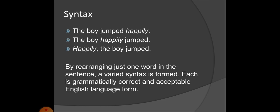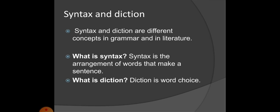In English language, 'The boy jumped happily' — this is the correct syntax, the meaning is also clear. 'The boy happily jumped' — the meaning is also clear. Both convey the same meaning and are syntactically and diction-wise correct. What is the difference between diction and syntax? They are different concepts in grammar and literature. Syntax is the arrangement of words that makes a clear sentence.